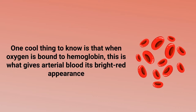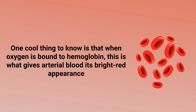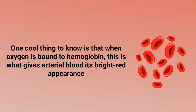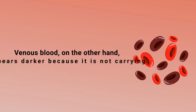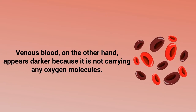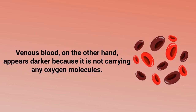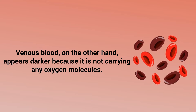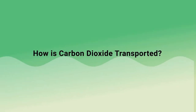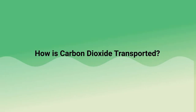One cool thing to know is that when oxygen is bound to hemoglobin, this is what gives arterial blood its bright red appearance. Venous blood, on the other hand, appears darker because it is not carrying any oxygen molecules.